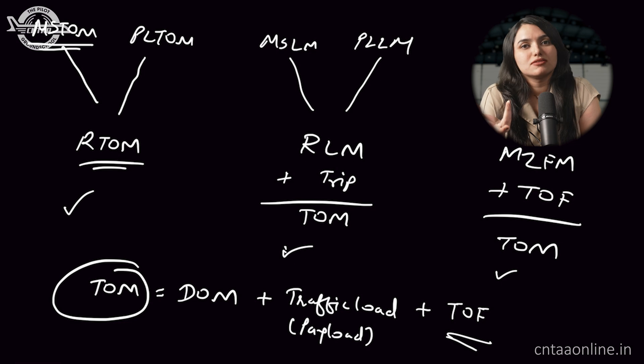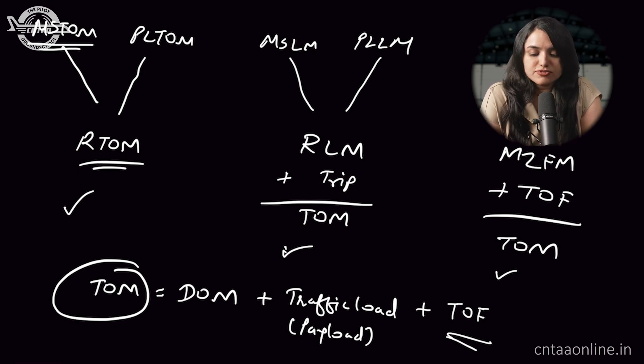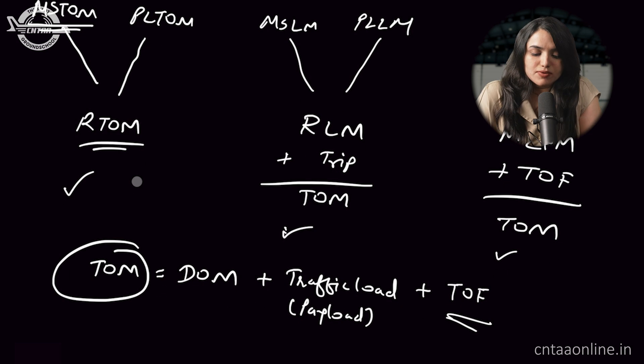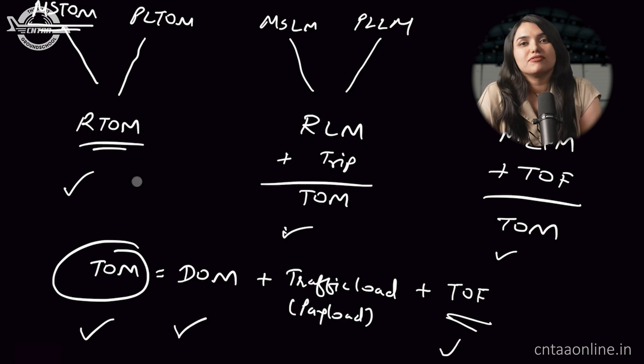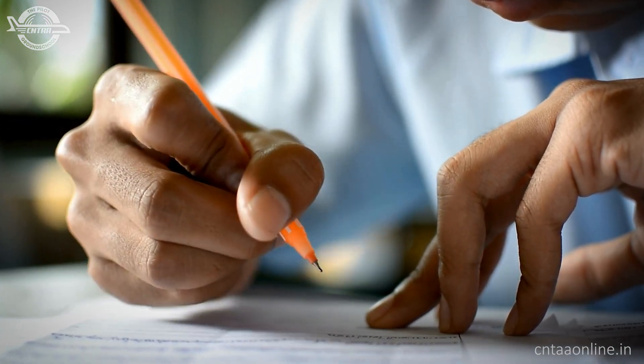Dry operating mass can be found from the operations manual of the airline, and traffic load is calculated for a given flight. Once you know the takeoff mass, dry operating mass, and takeoff fuel, you can calculate the traffic load. I hope this has simplified your concepts — this is very important for payload, and many exam questions are asked from this topic. Feel free to reach out in the comments below. Thank you very much, have a great day ahead!